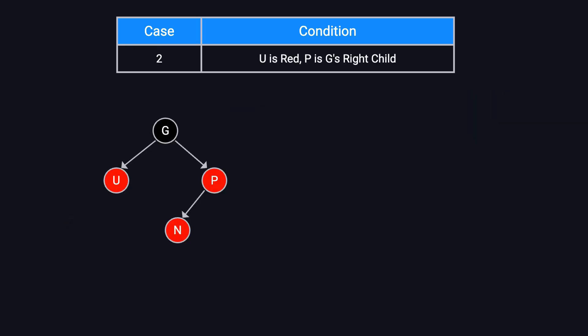Case two. If U is red and P is G's right child, this is the mirror image of case one. The adjustment steps are exactly the same as in case one.